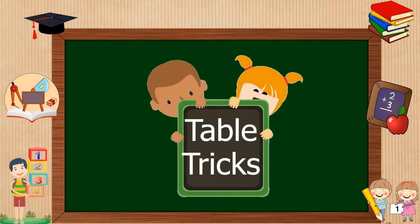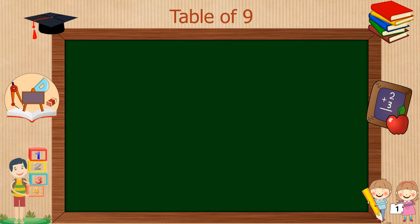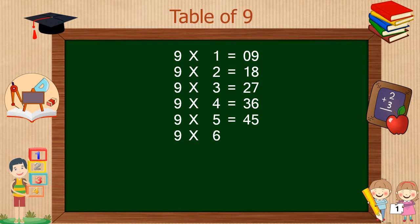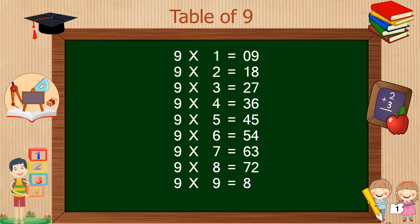Table tricks — table of 9. 9 times 1 is 9, 9 times 2 is 18, 9 times 3 is 27, 9 times 4 is 36, 9 times 5 is 45, 9 times 6 is 54, 9 times 7 is 63, 9 times 8 is 72, 9 times 9 is 81, 9 times 10 is 90. Table of 9 is the hardest table among all tables from 2 to 9 for most students.